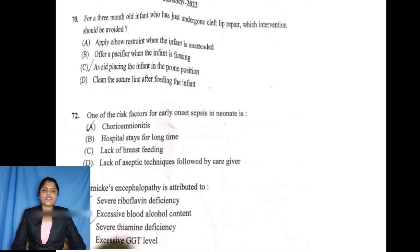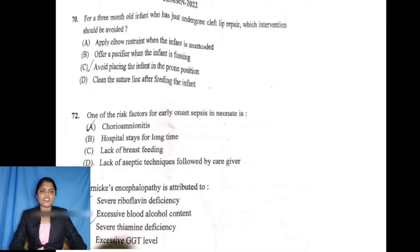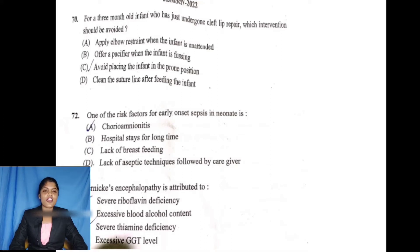For a 3-month-old infant who has just undergone cleft lip repair, which intervention should be avoided? Option A is apply elbow restraints when the infant is unattended. Option B is offer a pacifier when the infant is fussing. Option C is avoid placing the infant in the prone position. Option D is clean the suture line after feeding. Option C is correct: avoid placing the infant in the prone position.